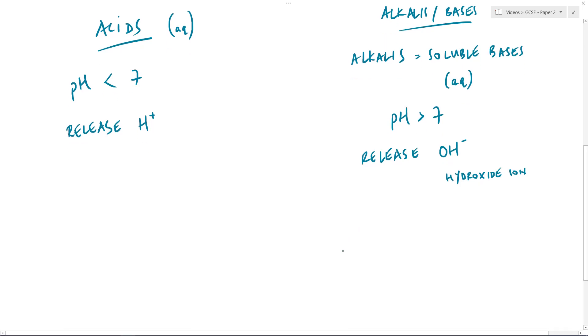We can use equations to show this, particularly from the acid point of view. So we could say that hydrochloric acid when it is in solution, we find it splits into H+ and Cl-. So there it is, it is releasing an H+ ion.